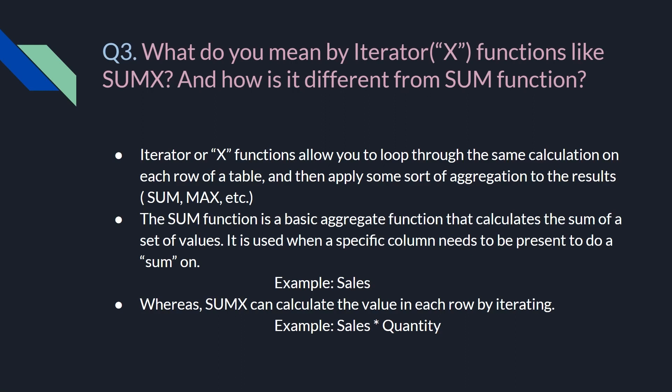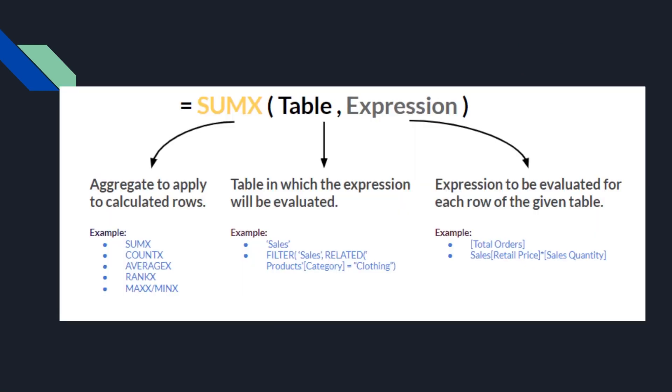The SUM function is a basic aggregate function that calculates the sum of a set of values, and it is used when a specific column needs to be present to do a sum on — for example, summing a sales column. SUMX can calculate the value in each row by iterating — for example, sales multiplied by quantity — over each and every row. The SUMX syntax in Power BI takes a table name and then an expression, which could be a single column or a calculation across two columns. You can also apply filters on the table.